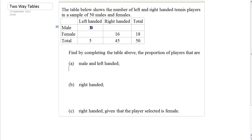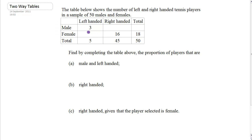We know there are three men who are left-handed, and we know the total is five, so that must mean that the number of females that are left-handed is two — three away from five is two. Now, if we've got 16 females that are right-handed and 45 right-handed altogether, take 16 away from 45: 10 away from 45 is 35, take 6 away, leaves us 29 right-handed males. Add three and 29 to get all the men — left-handed plus right-handed gives you 32. Check: 32 plus 18 gives you 50, so they all add up.